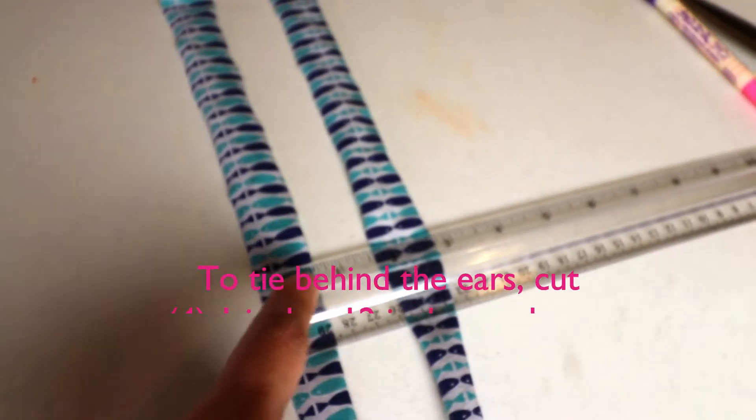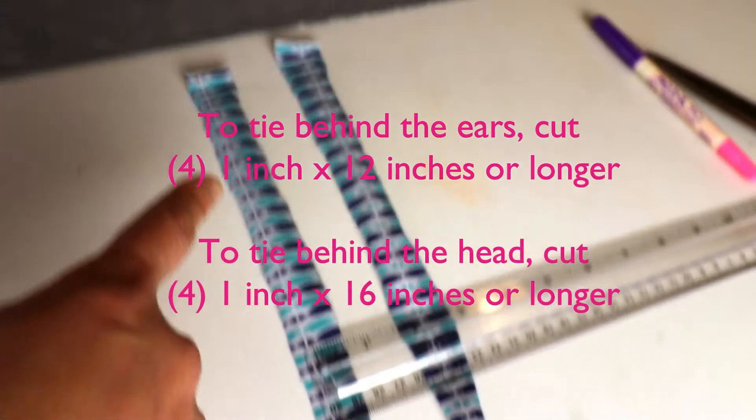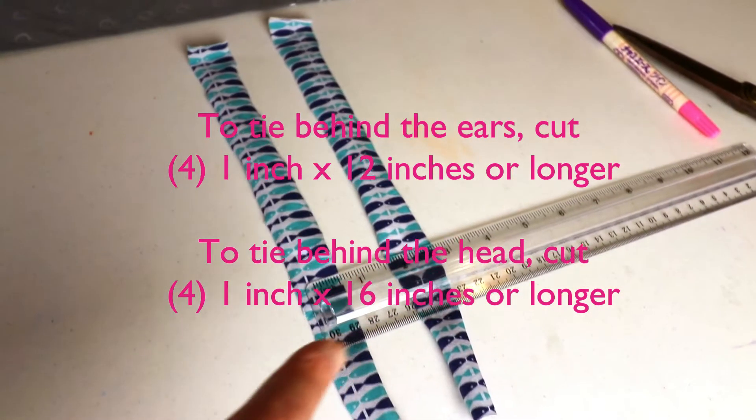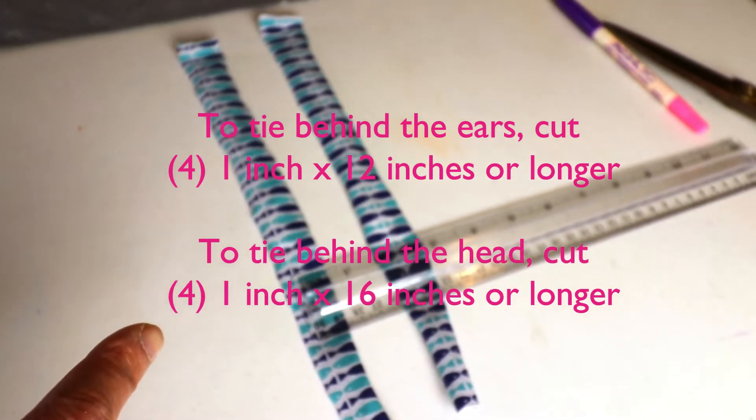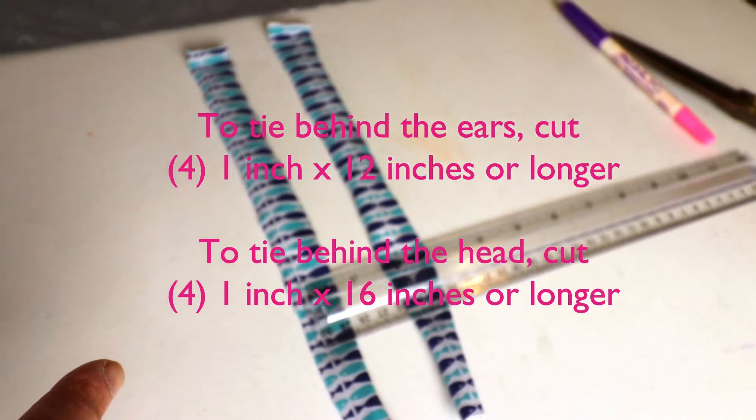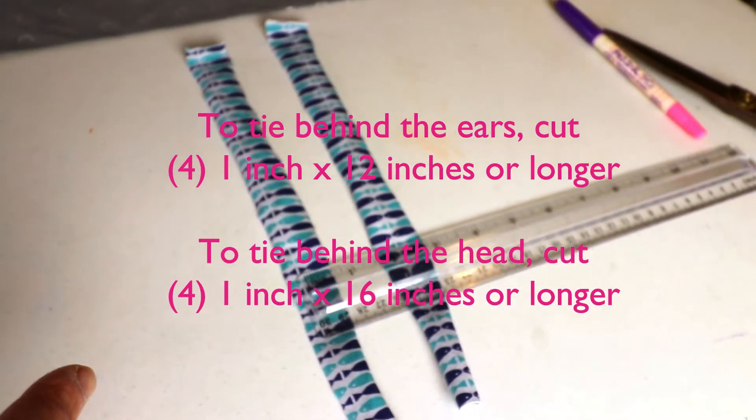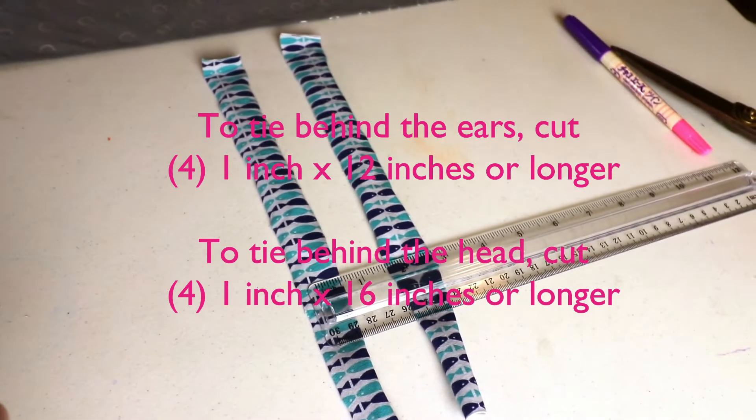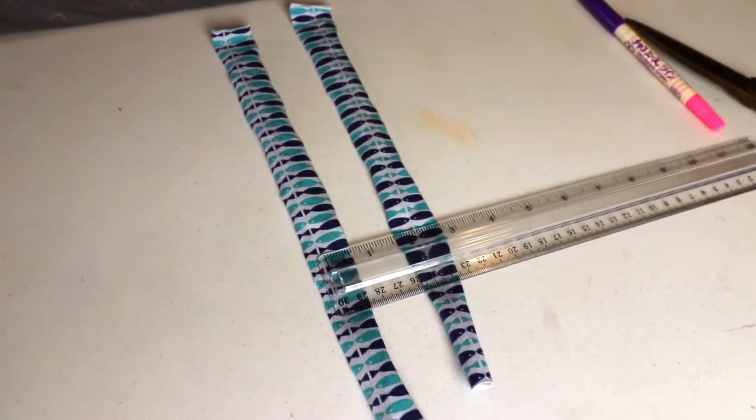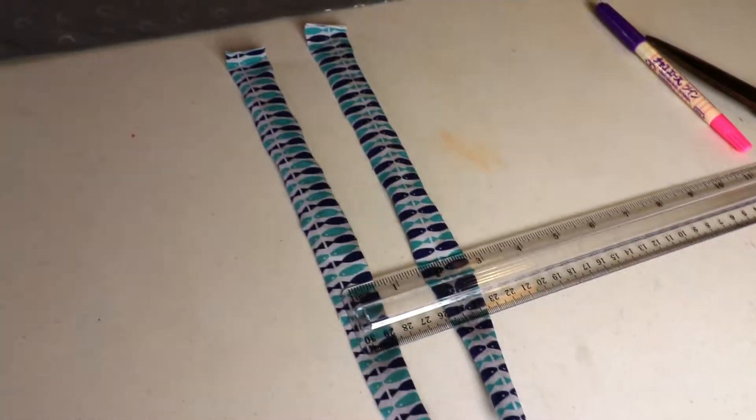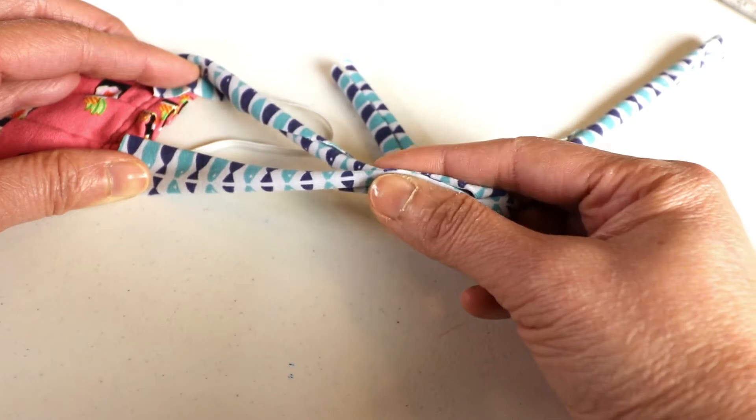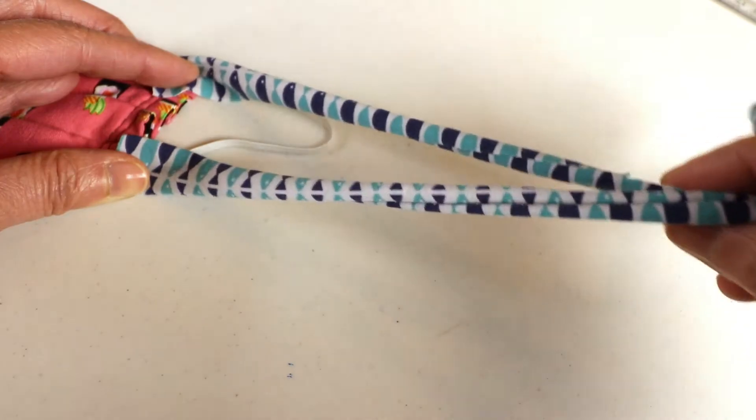Here I cut up about one inch wide and 12 inches long and you will need four of them so you can tie it behind your ear. If you want to tie it behind your head you can get it longer maybe around 16 inches and if you need to adjust again you can just untie the knot and tie a new knot.